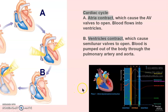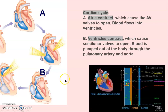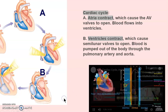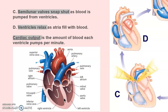When the ventricles contract, blood leaves the heart. Cardiac output tells you how much blood is being expelled from the ventricles — this is important when assessing a patient. This illustration shows the full path: atrium, ventricle, to the lungs to get oxygen, then atrium, ventricle, to the body through the aorta.